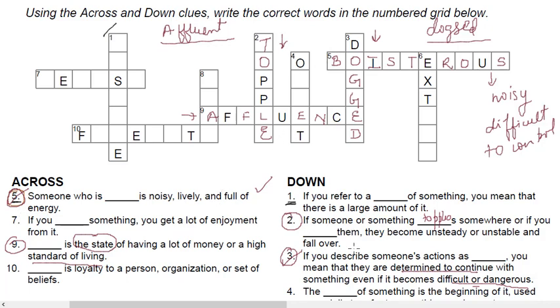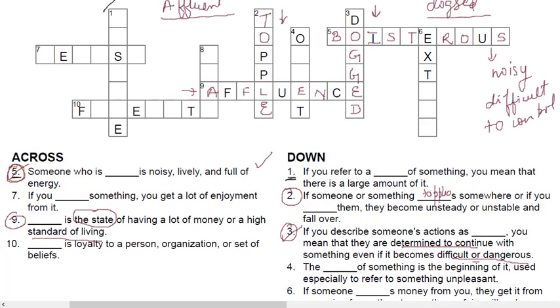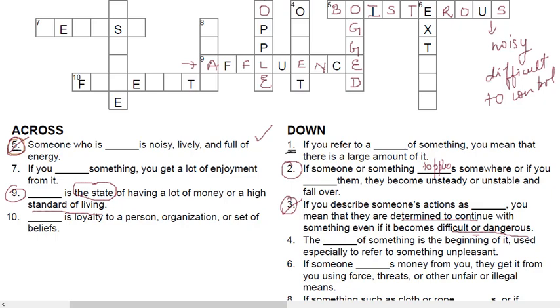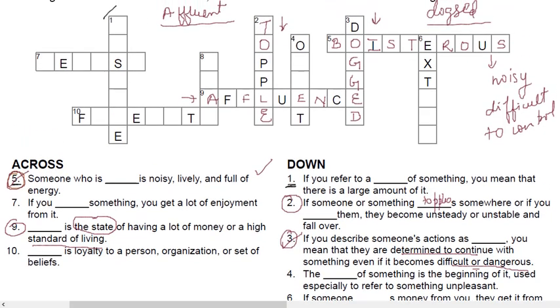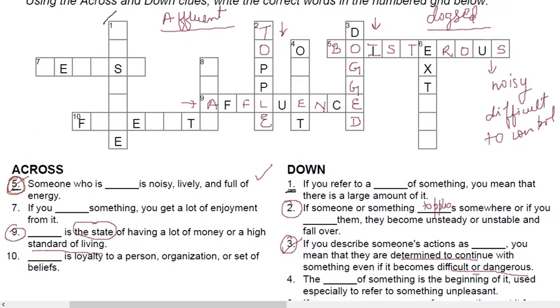So the fourth one, the fourth one is down. It says, the dash of something is the beginning of it. The dash of something is the beginning of it used especially to refer to something unpleasant. So the dash of something is the beginning of it. Now, if you look at this word here, the word starts with O because it refers to the dash of something. And it's the beginning of something. So the word is onset. So the word onset is used negatively. In fact, the onset of the COVID-19 pandemic. That's the right way of expressing. Why? Because the onset word is used particularly for something unpleasant.